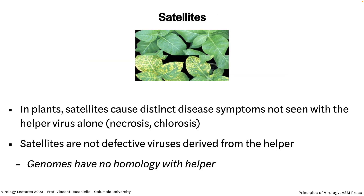In plants, satellites cause very different disease symptoms from the helper alone. When the helper infects a plant, you get one kind of pathogenesis; if there's a helper plus a satellite, you get a distinct disease. The kinds of disease include necrosis — destruction of plant cells — or chlorosis, which is no chlorophyll, seen as yellow spots on a plant. Satellites are not derived from the helper; they are a unique, distinct virus with no homology with the helper virus whatsoever.